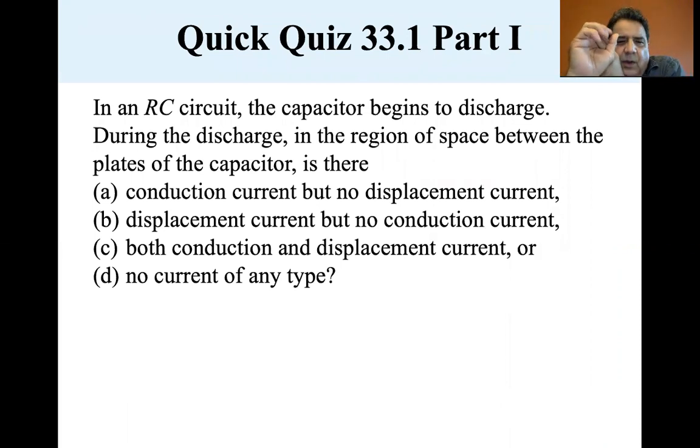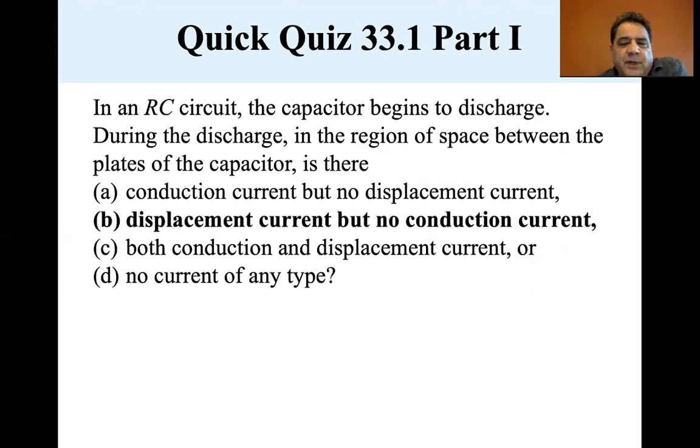Both conduction and displacement current? Or no current of any type? Well, there is only the displacement current. There's no conduction current because there's an air gap. So the charges aren't jumping across the plates. They can if the voltage is high enough, but that's not what we're talking about. So it's displacement current, but no conduction current.